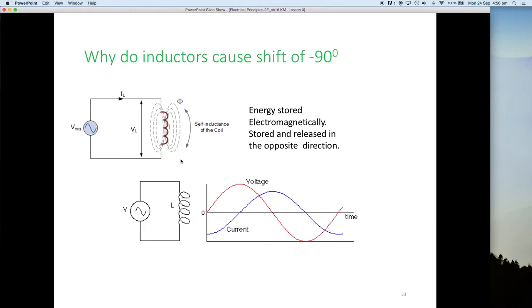So it's Lenz's law that says whenever a magnetic field collapses, it will oppose or go the opposite direction to the original current that established that magnetic field. So that is why we end up with this 90-degree shift. As the current crosses zero, the voltage is at its maximum, and when the current is at its maximum, the voltage is at its minimum.